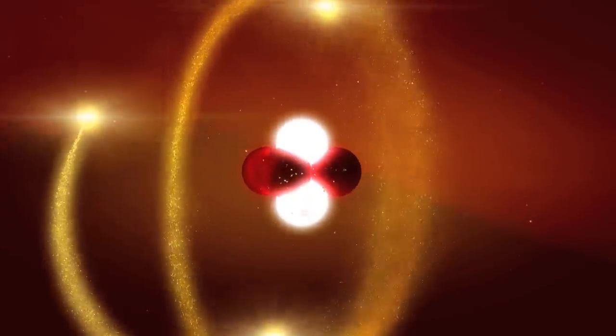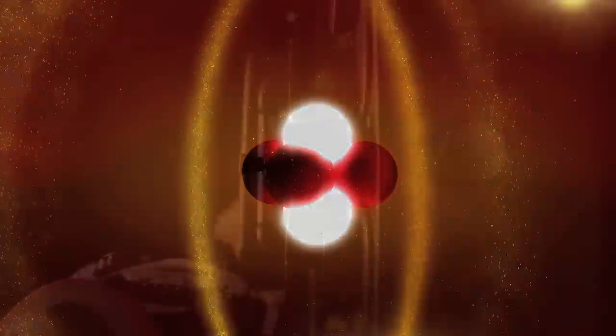Neutrons, which have no charge, cannot be focused by glass lenses to form images the way that light beams can. Instead, scientists use a silicon block with three precisely machined thin blades that act like mirrors to direct the neutron beam onto its target.